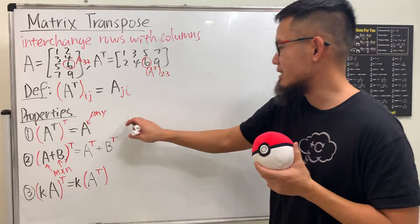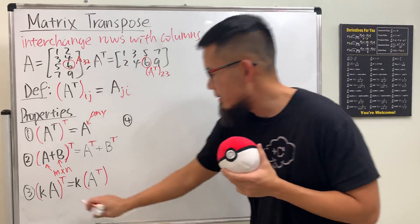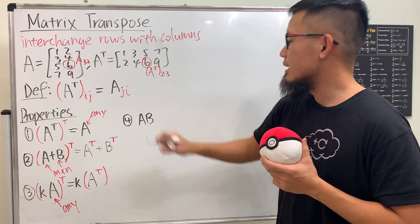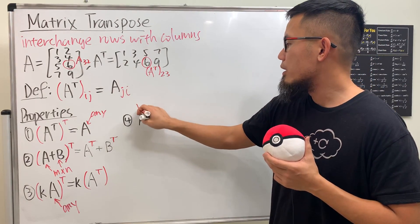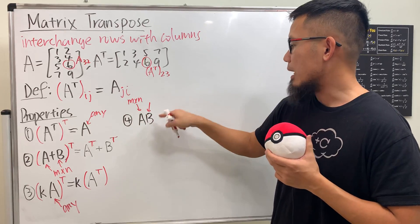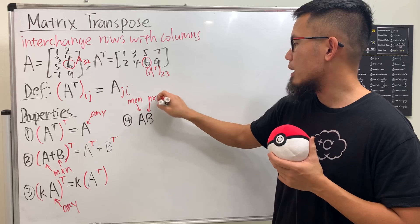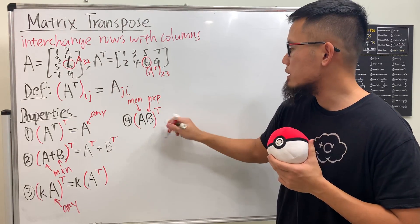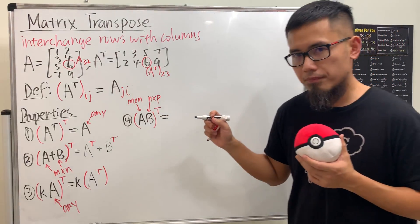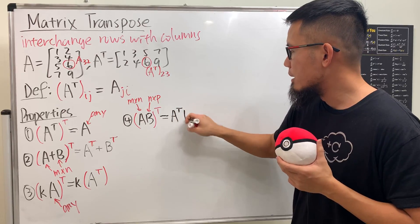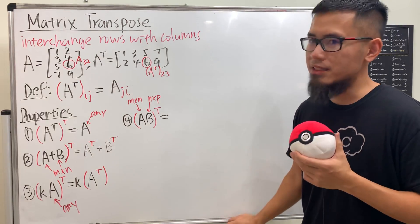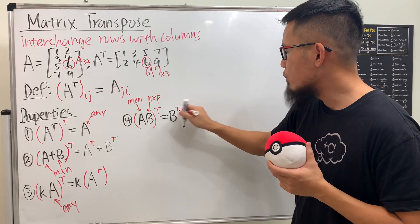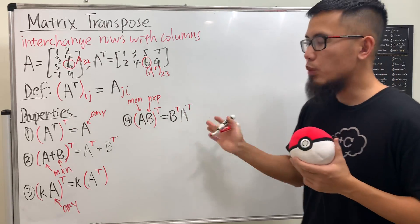Now we have a couple more slightly more interesting ones. Property four: let's talk about the product AB. We have to make sure the dimensions work — say A is N by N and B is N by P. If you think that AB transpose equals A transpose times B transpose, let me tell you, it's wrong. This right here is actually the same as B transpose times A transpose — and this is the one I will prove for you.